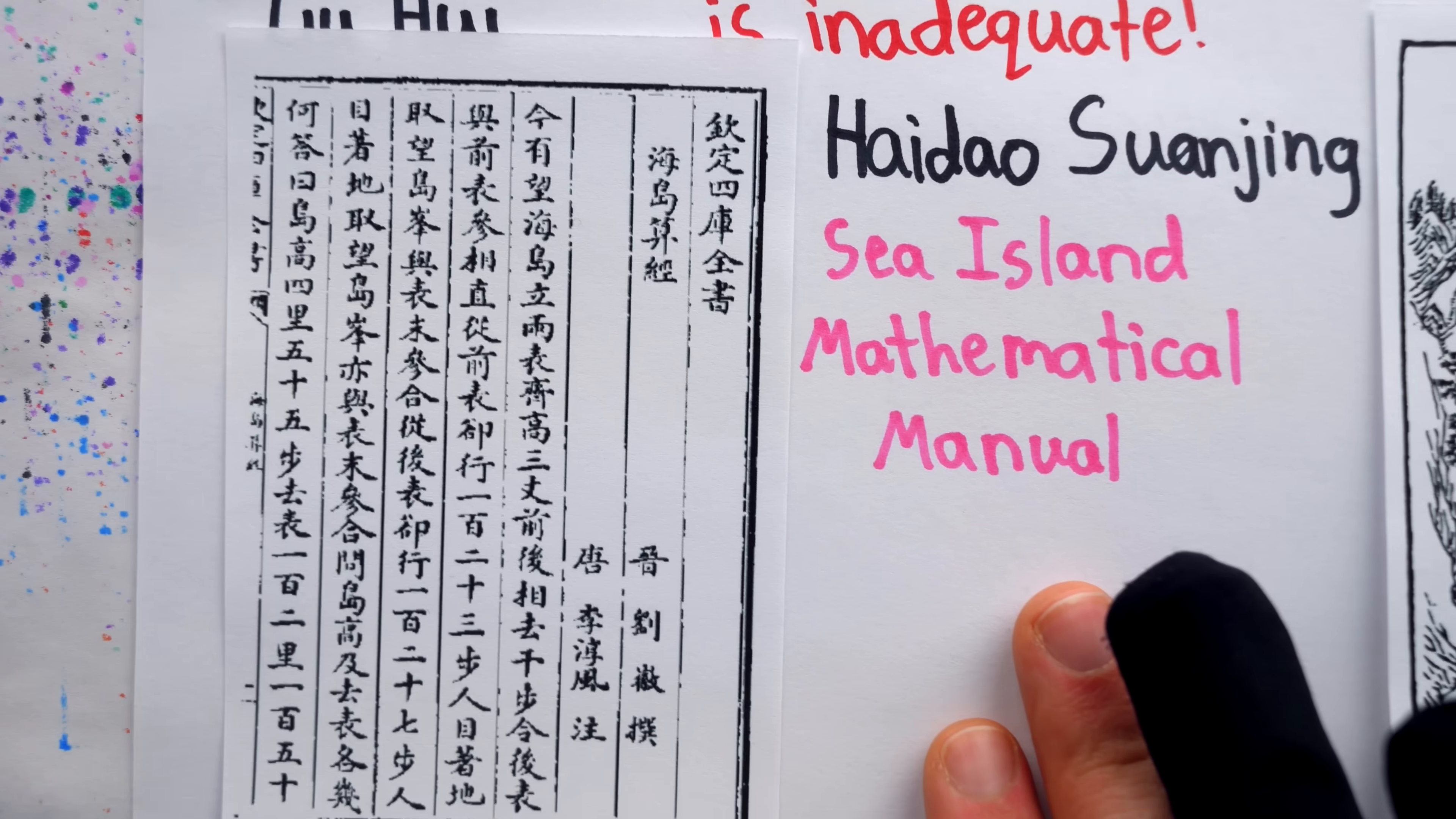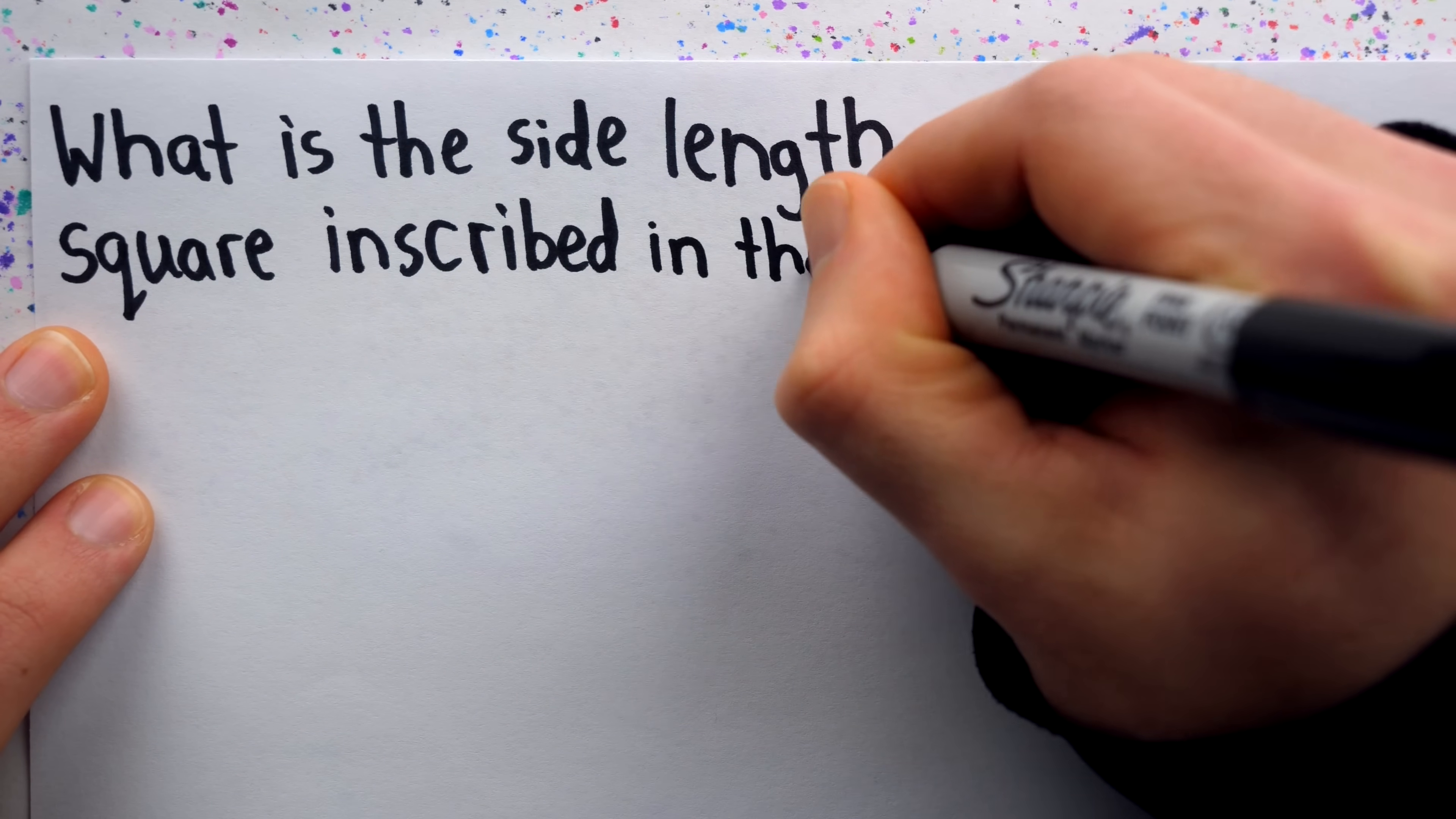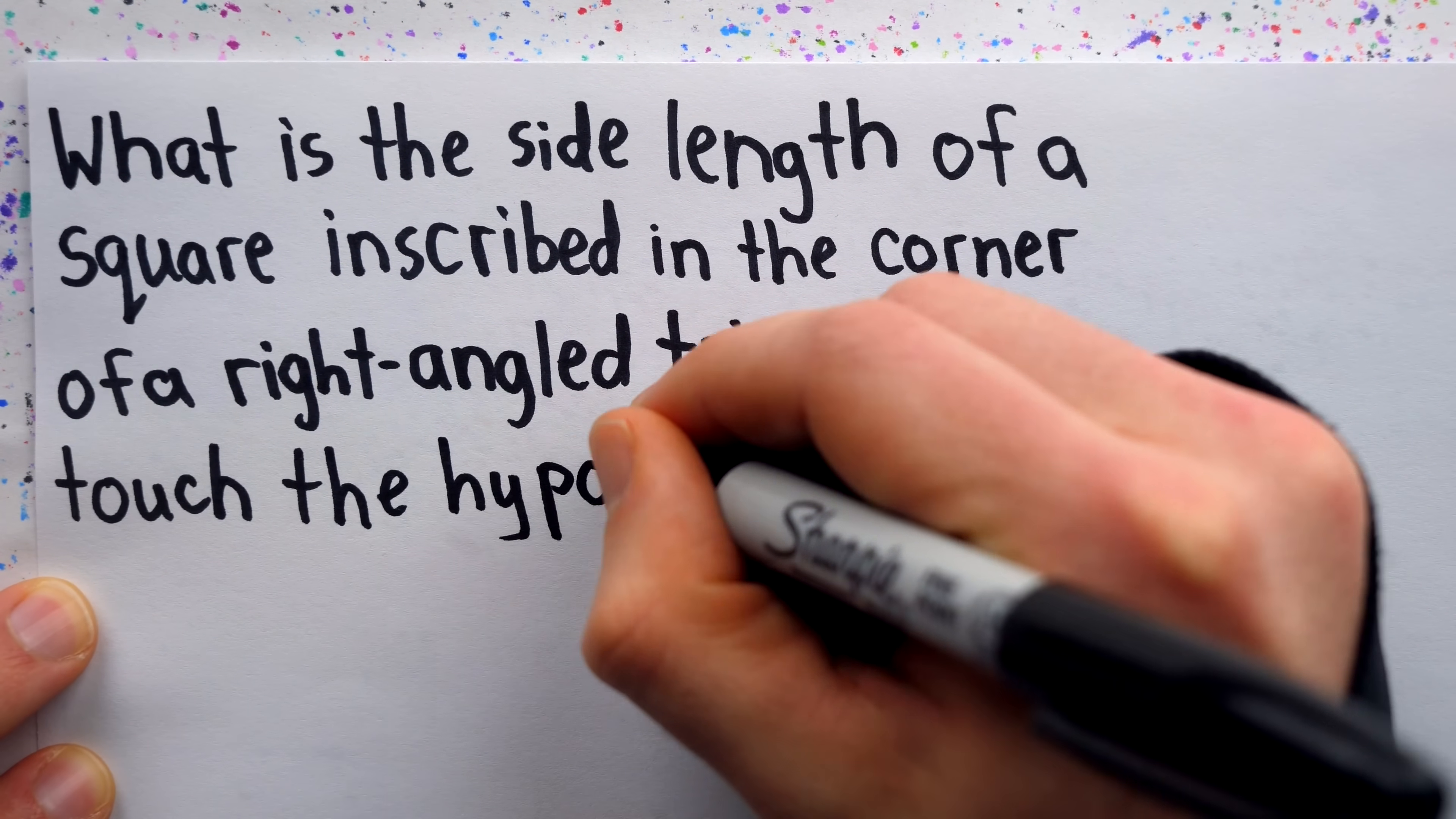The problems in the Sea Island Mathematical Manual are stated in practical surveying terms, but one of the problems, when put into modern geometric language, asks: what is the side length of a square inscribed in the corner of a right-angled triangle to touch the hypotenuse?